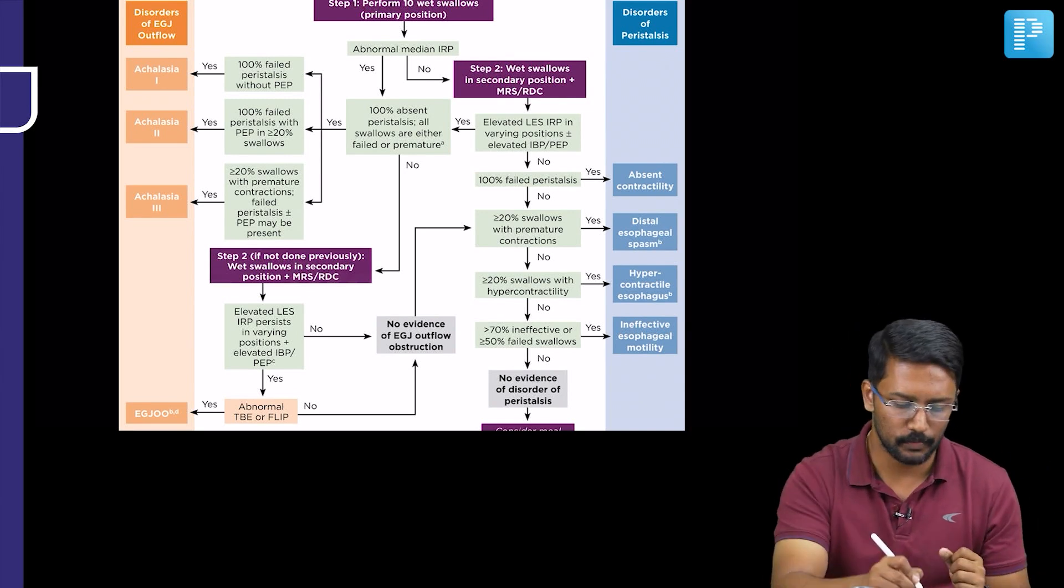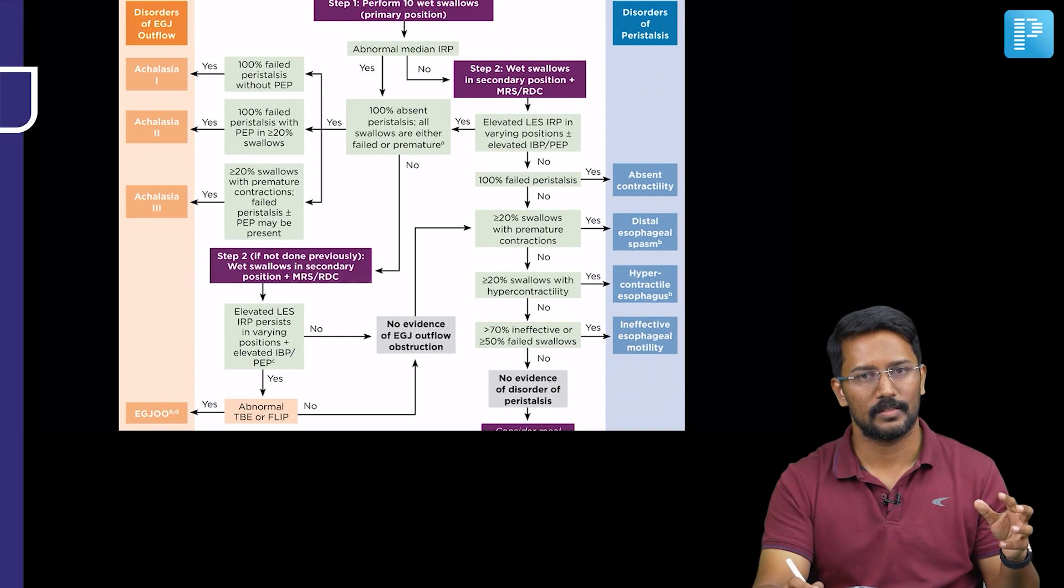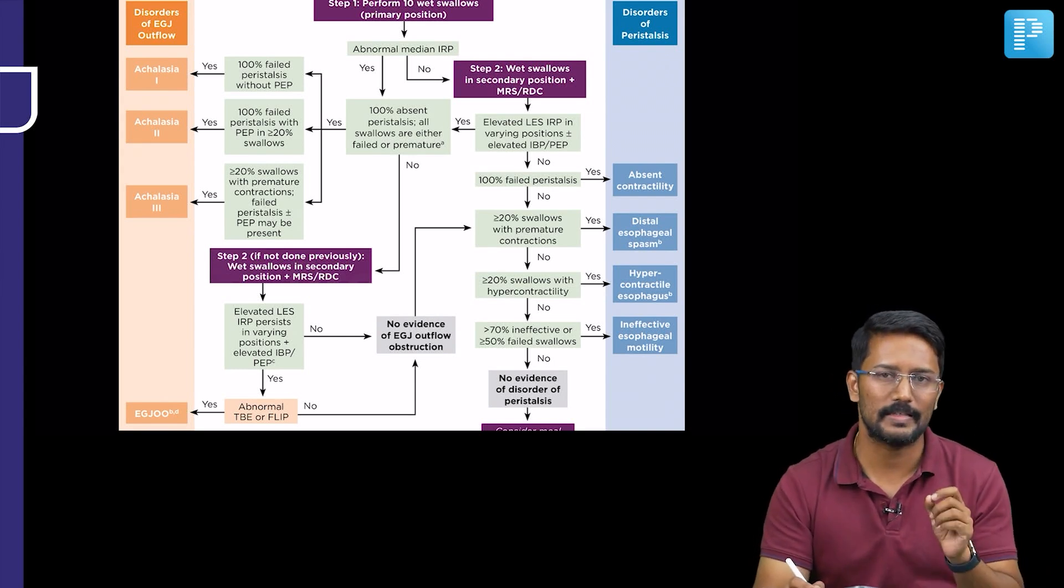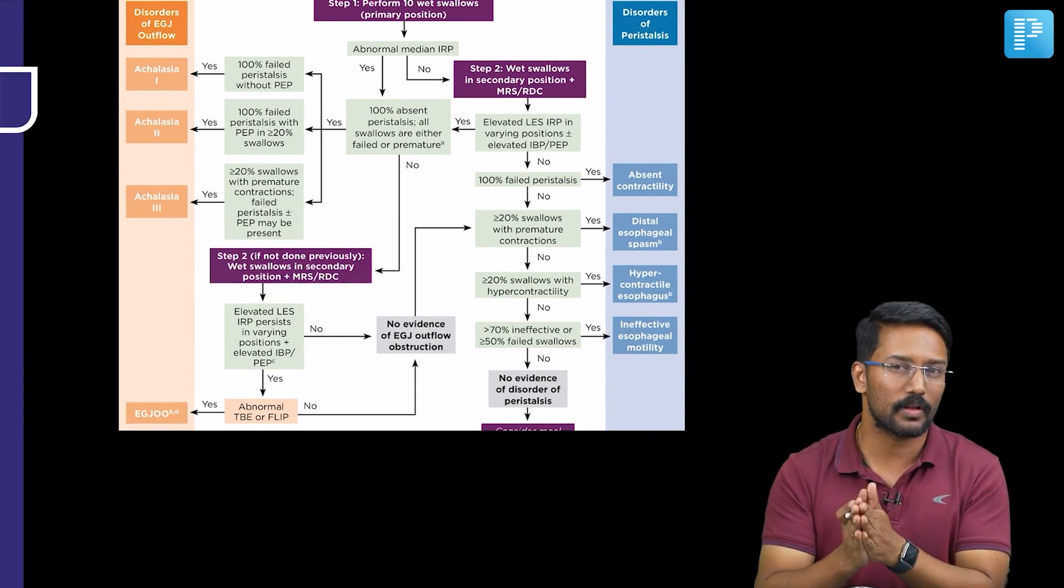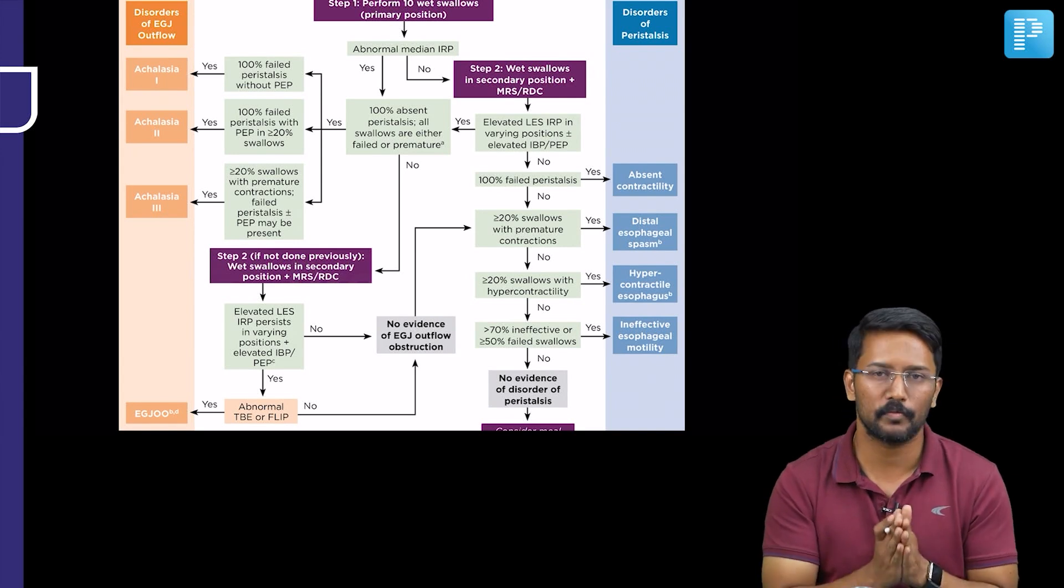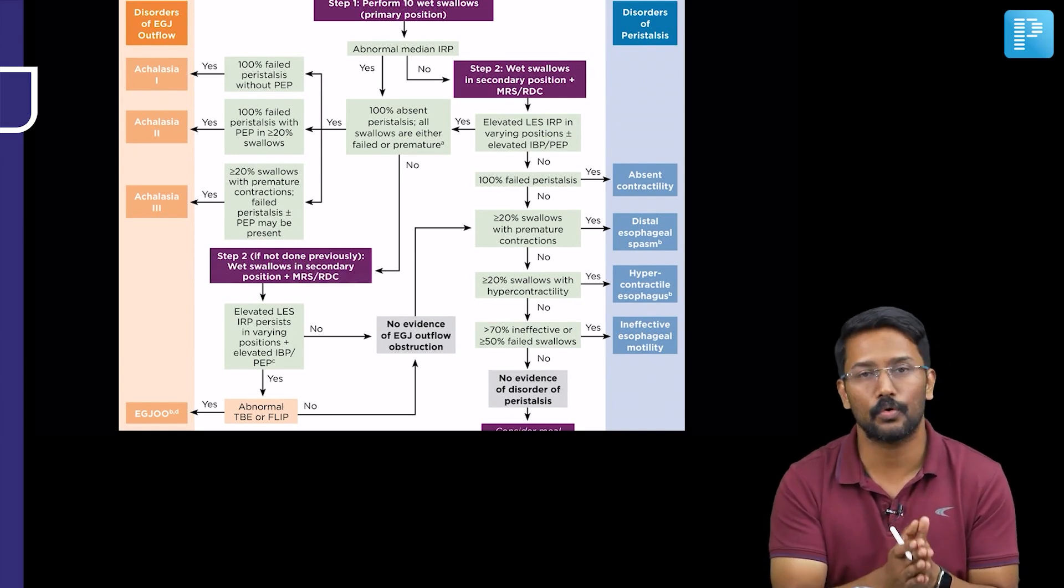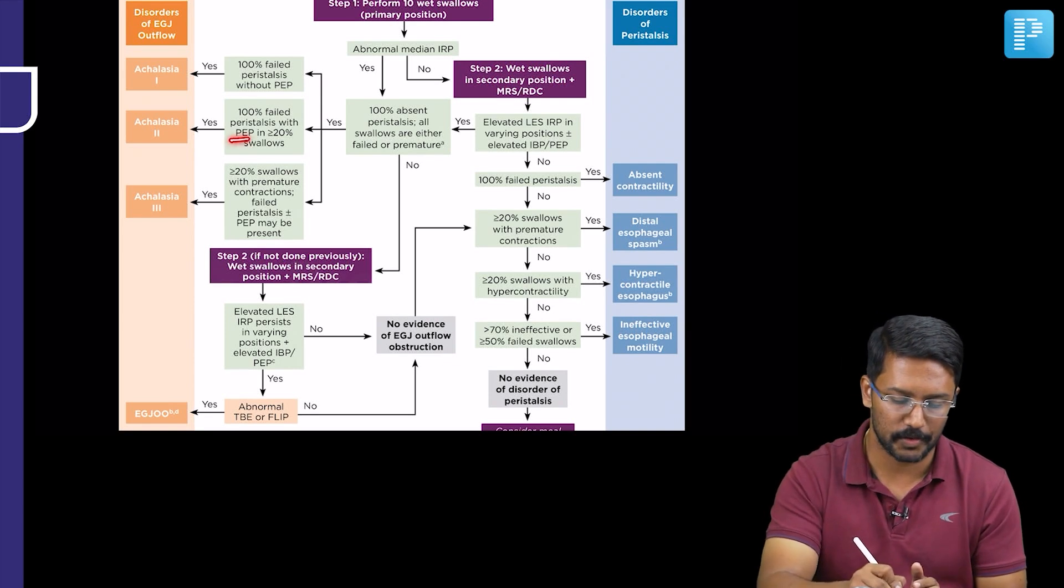Then you have a type two, where you see apart from absent peristalsis and the elevated median IRP, you will see that 20 percent or more than that of the total swallows that you perform for HRM would show, would show what? There will be panesophageal pressurization.